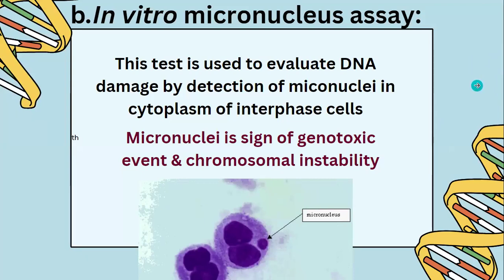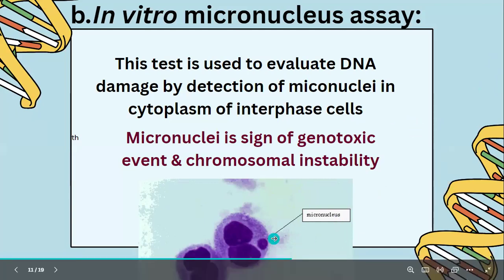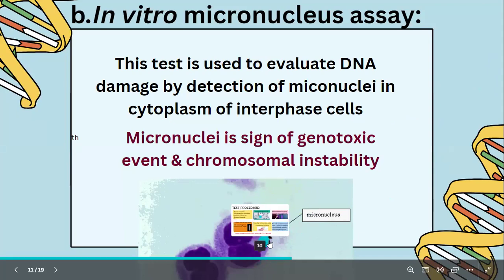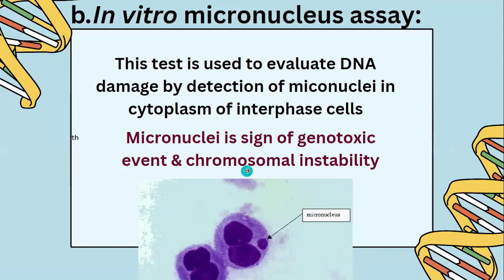The next test is the in vivo micronucleus test. This test is used to evaluate DNA damage by detecting micronuclei in the cytoplasm of interphase cells. A micronucleus is a sign of a genotoxicity event and chromosomal instability. It is a small nucleus formed when a chromosome fragment is not properly incorporated during cell division.